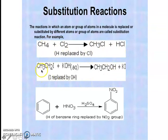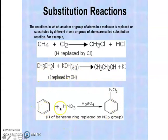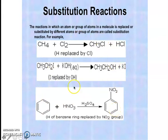Another example is iodoethane (ethyl iodide) reacting with aqueous KOH, where the iodine is replaced by OH — this is another substitution reaction. A third example is benzene reacting with HNO3 and H2SO4, where the nitro group becomes attached to the benzene ring, replacing one hydrogen atom. These are three categories of substitution reaction.